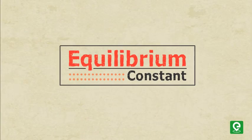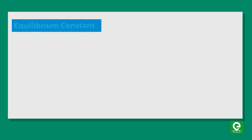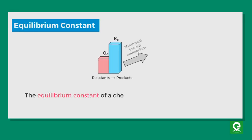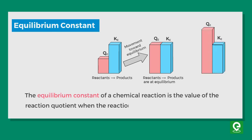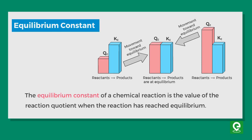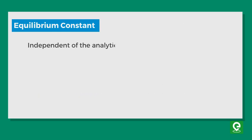What is equilibrium constant? The equilibrium constant of a chemical reaction is the value of the reaction quotient when the reaction has reached equilibrium. The value of an equilibrium constant is independent of the analytical concentrations of the reactant and product species in a mixture.